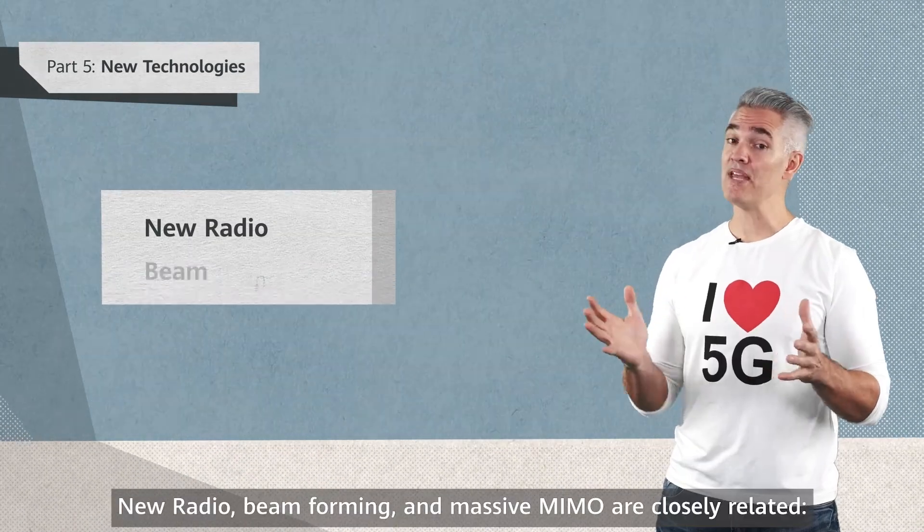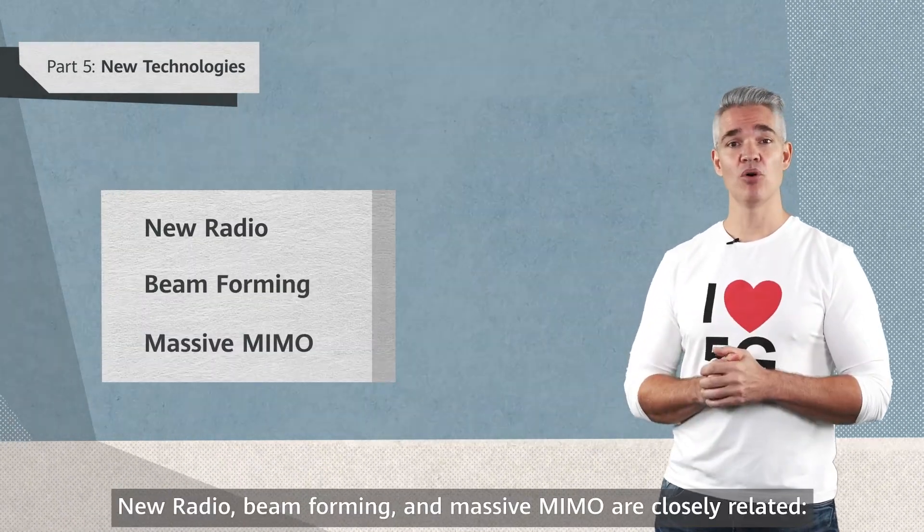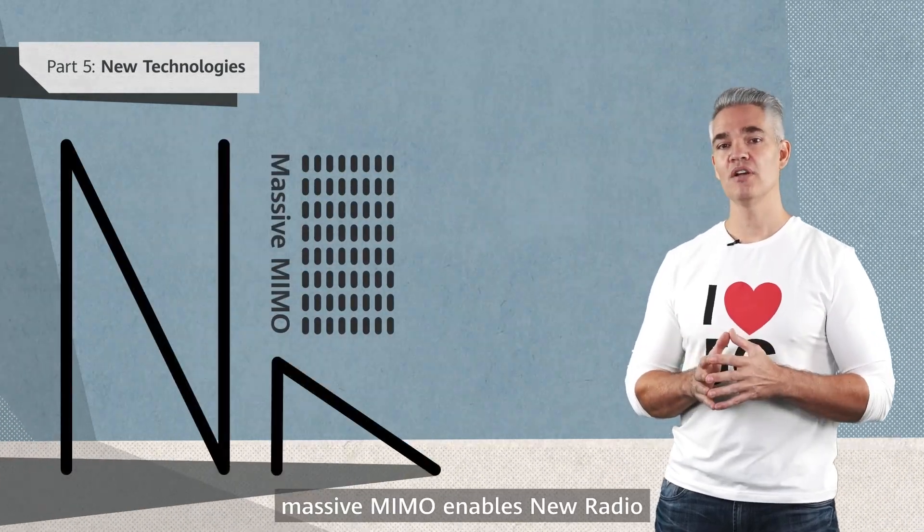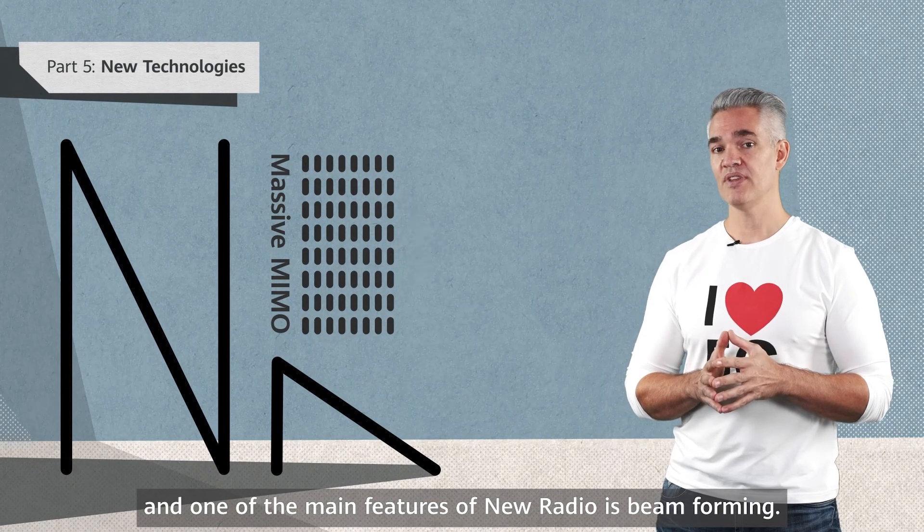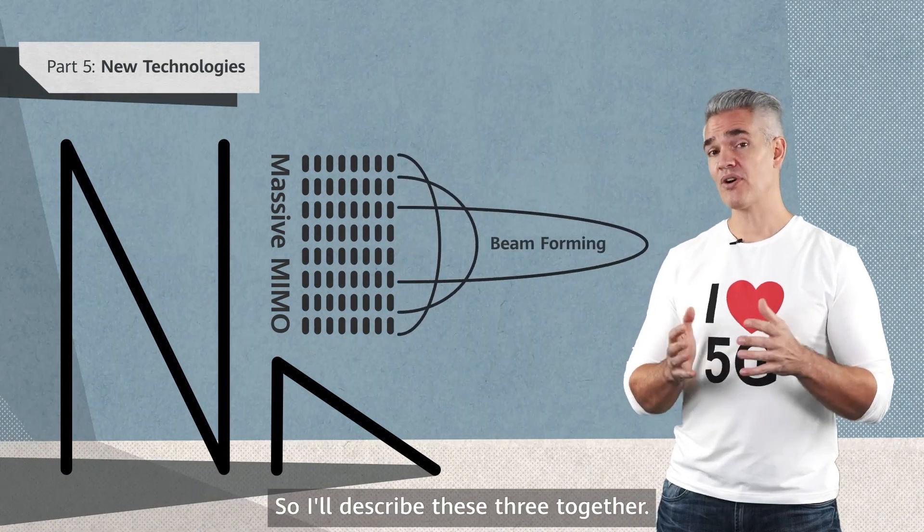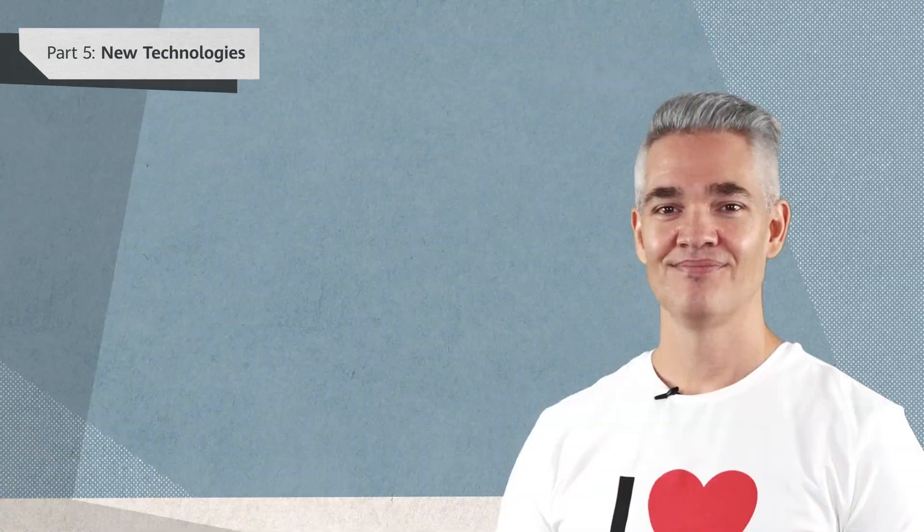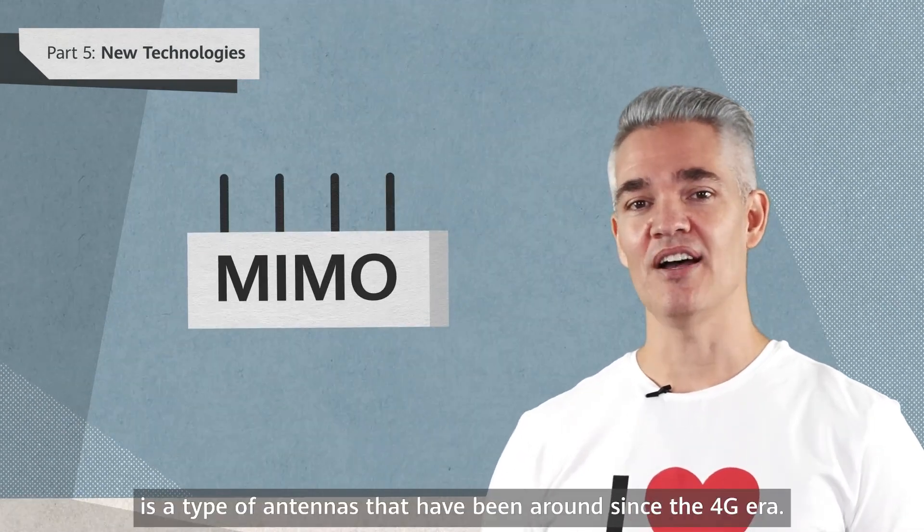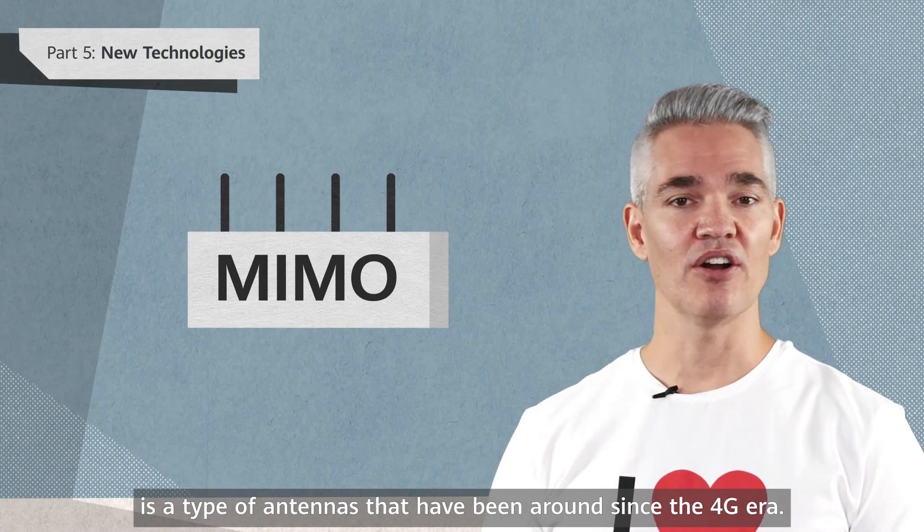New radio, beamforming, and massive MIMO are closely related. One of the main features of new radio is beamforming, so I'll describe these three together. MIMO, an abbreviation for multiple input and multiple output, is a type of antenna that's been around since the 4G era.